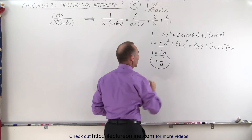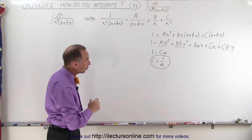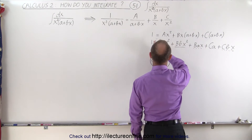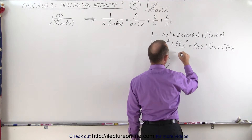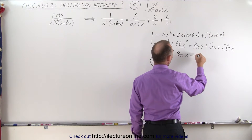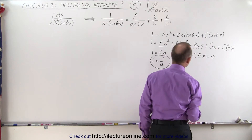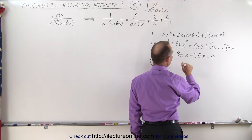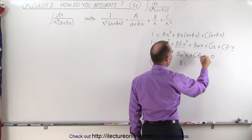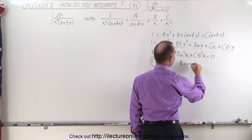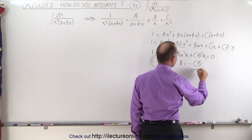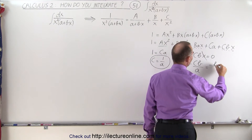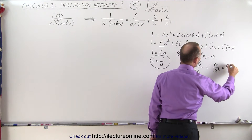Next, we solve for big B by taking the x to the first power terms and setting them equal to zero, because we don't have an x term on the left side. So bax plus Cbx equals 0, and we can cancel the x's. Solving for B, we move the Cb term to the other side: B equals minus Cb divided by a. Remembering that C equals 1 over a, this becomes B equals minus b over a squared.